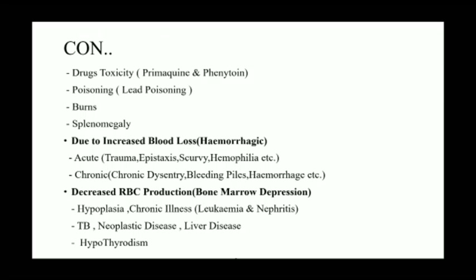Due to increased blood loss: acute — hemorrhage, traumatic, epistaxis, scurvy, hemophilia etc. Chronic mein dysentery, bleeding, piles, hemorrhage ho sakte hain. Decrease in RBC production mein hypoplasia, chronic illness — leukemia, nephritis, TB, neoplastic disease, liver disease, hyperthyroidism ho sakta hai patient mein.